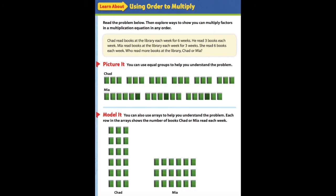Our first picture is showing us Chad's books that he read. He went for 6 weeks, so we have 6 groups of books there: 1, 2, 3, 4, 5, 6 groups. And in those groups, there are 3 books because each week he read 3 books.